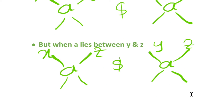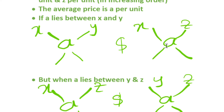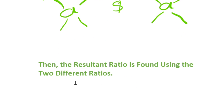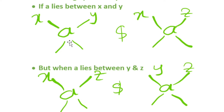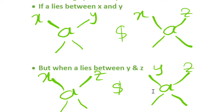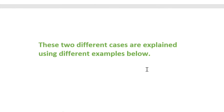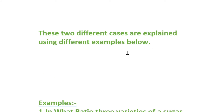I'll explain both cases by considering two simple examples so you get a very easy way to understand this topic. After doing the allegation, just as in previous problems, we get some ratio at the end. The resultant ratio can be easily found by combining the two different ratios obtained from the two allegations.